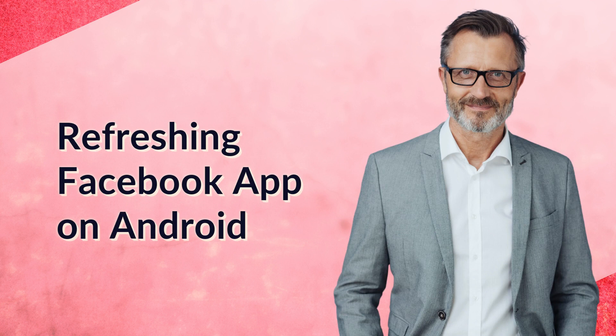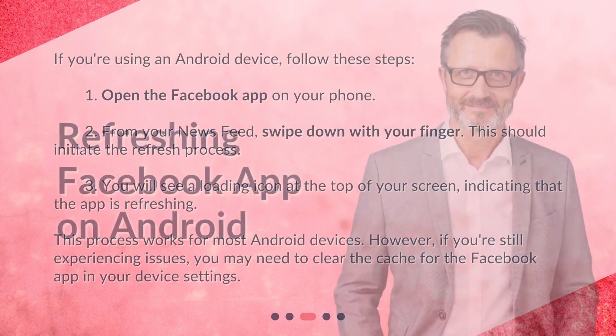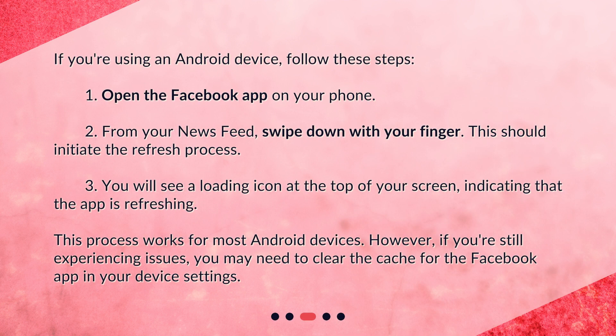Refreshing Facebook app on Android. If you're using an Android device, follow these steps. First, open the Facebook app on your phone. Second, from your news feed, swipe down with your finger — this should initiate the refresh process. Third, you will see a loading icon at the top of your screen, indicating that the app is refreshing. This process works for most Android devices.